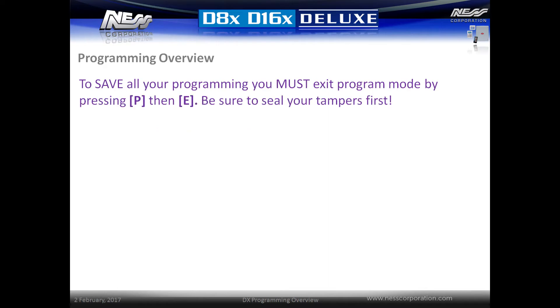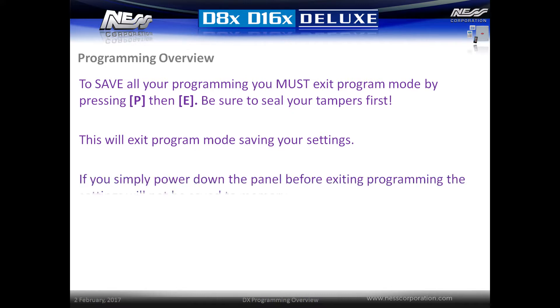To save any programming changes, you must exit program mode by pressing P then E. Be sure to seal the tampers first to avoid the system going into alarm. This will exit program mode and save all your settings.